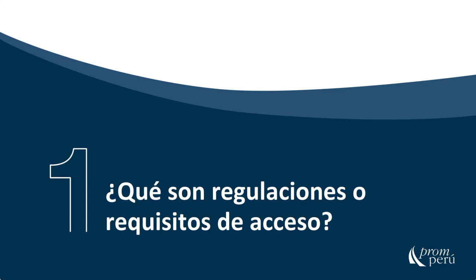Antes de continuar, diferenciemos dos términos que aparecerán en la presentación: Reino Unido y Gran Bretaña. El Reino Unido es el conjunto que forma Inglaterra, Gales, Escocia e Irlanda del Norte. En cambio, Gran Bretaña es la isla principal del Reino Unido donde se encuentran Inglaterra, Gales y Escocia, sin contemplar Irlanda del Norte. Para lo transversal, todos los requisitos que repasaremos hoy se cumplen para el Reino Unido en general.